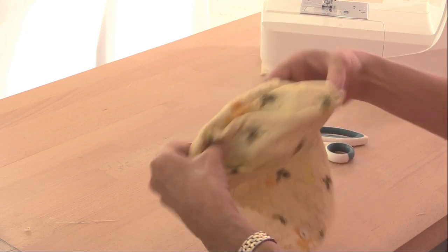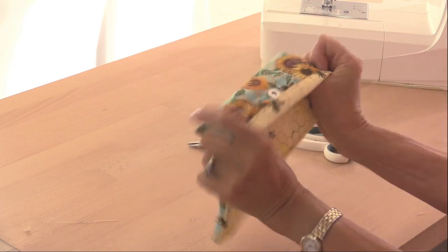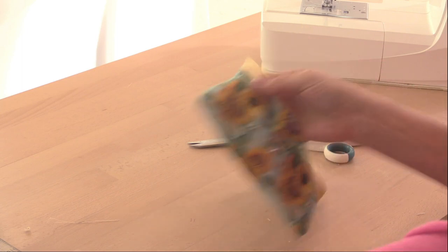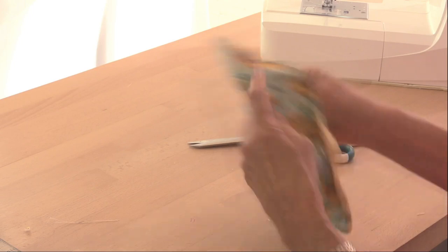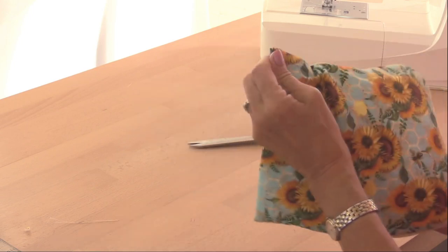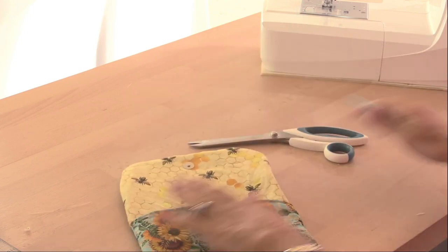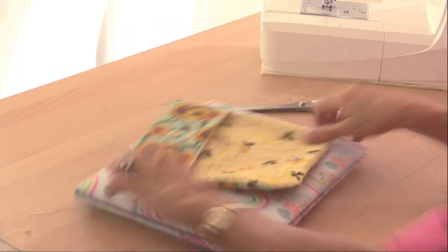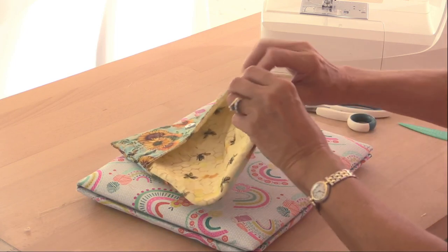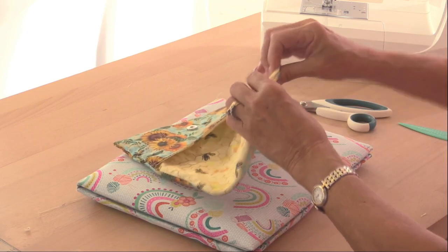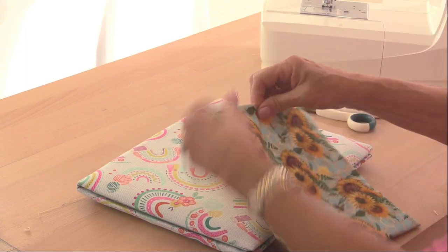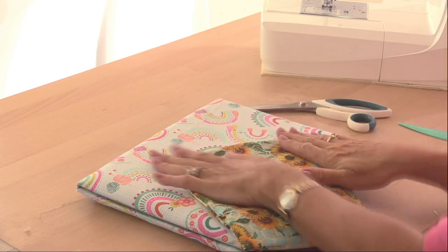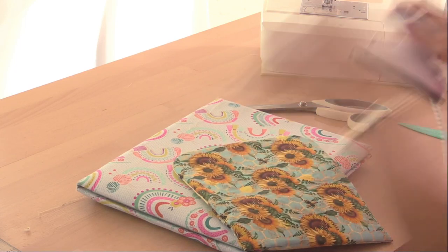And then we turn this the right side out. I'm going to use a little turning tool just to push the corners out. And then we'll need to iron that. So let's pull this so that the seam sits right on the edge here and I've got a nice curve around here. And then we'll press it.